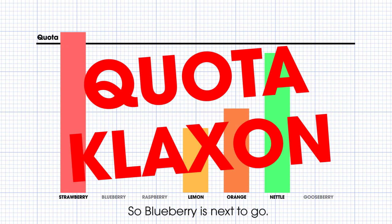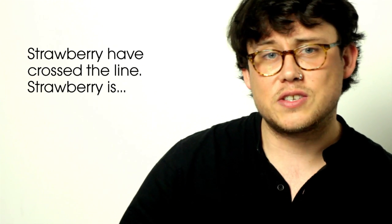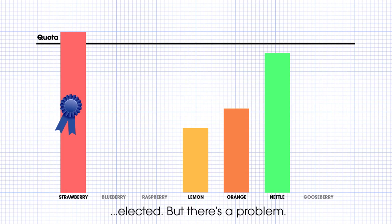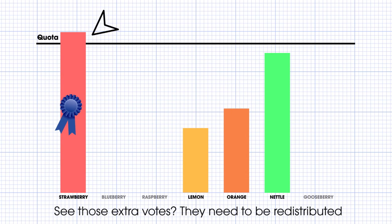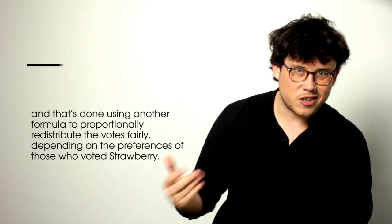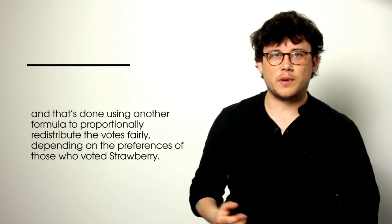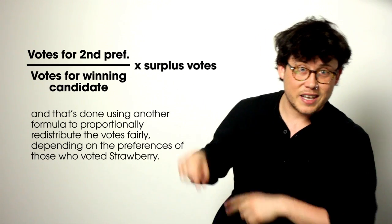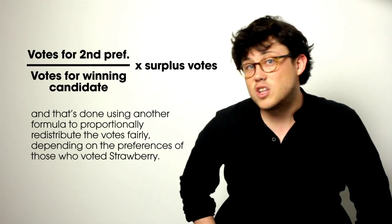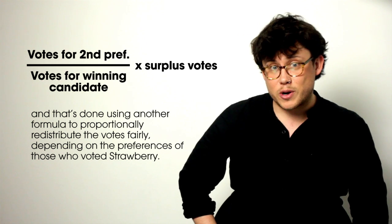And there it is! Strawberry have crossed the line — strawberry is elected. But there's a problem: now strawberry has too many votes. See those extra votes over the quota? Those now need to be redistributed, and that's done using another formula to proportionally redistribute the votes fairly, depending on the preferences of those who voted strawberry.